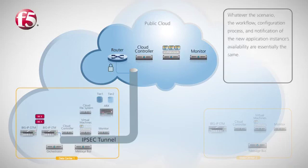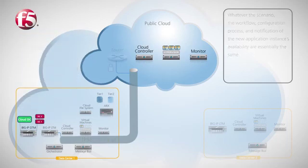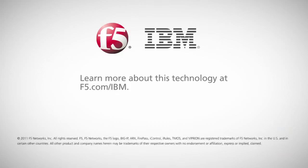Whatever the scenario, once the orchestrator receives the event notification, it executes an automated workflow as we saw before. Each device or system involved is configured and notification is sent that the new application instance is running and ready to receive connections. This automated workflow, which was kicked off by Big IP GTM, resulted in the deployment of a new application instance in a completely new data center and in the public cloud.